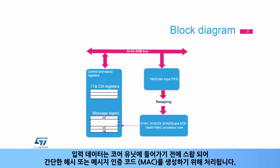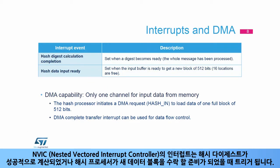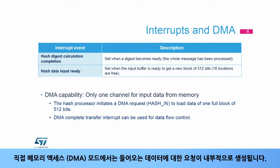Input data may be swapped before entering the core unit where they will be processed to generate a simple hash or a message authentication code or MAC. An interrupt in the nested vectored interrupt controller or NVIC is triggered when a hash digest has been successfully calculated or when the hash processor is ready to accept a new block of data. In direct memory access or DMA mode, requests are generated internally for incoming data.